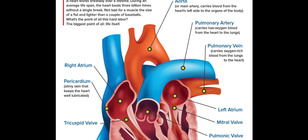The pulmonary vein carries oxygen-rich blood from the lungs to the heart. We can call low-oxygen blood 'deoxygenated blood,' and oxygen-rich blood we call 'oxygenated blood.'